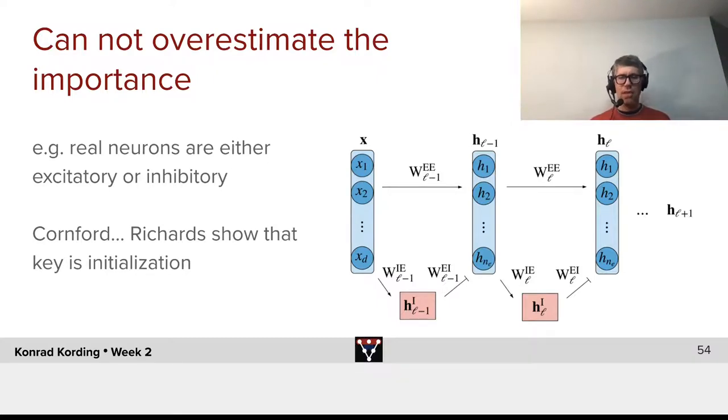In brains, there exist two types of neurons. There exist excitatory neurons, all their weights are positive, and there's inhibitory neurons, and all their weights are inhibitory. And it was known that training such networks is extremely difficult.